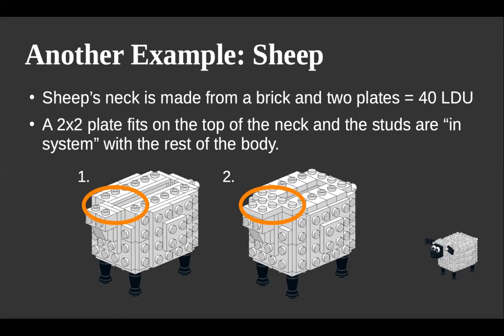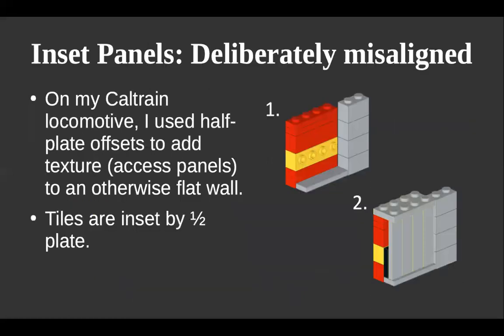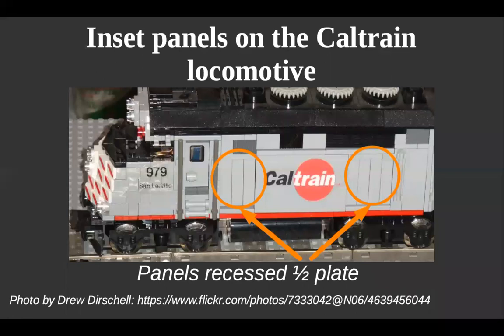Another trick you can do — which I've done in my LEGO Caltrain locomotive — is to have some panels be deliberately misaligned. I've placed some tiles on a plate and then put that onto a brick with studs on the side, making those panels a half-plate set in. That provides a little interesting texture, so the wall of the locomotive represents some of the access panels and doors on the real thing. In the front I've got three studs, in the back four studs, inset by a little bit — just to make sure the wall isn't totally flat.